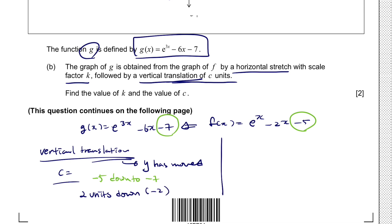For the horizontal stretch, horizontal stretch refers to the x-axis. You can see that function G of x has a 3 in front of the first x term, while f of x has 1 in front. We also have negative 6 here compared to negative 2. So it has stretched by a factor of 1 over 3, meaning k equals 1 over 3.